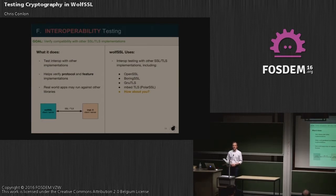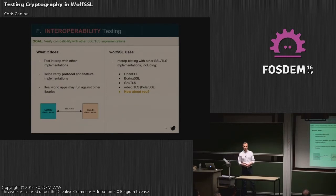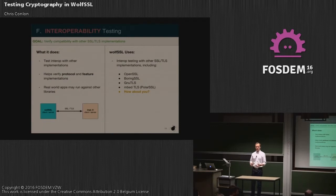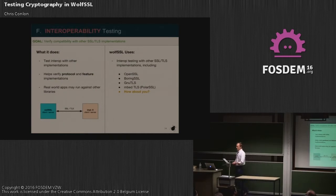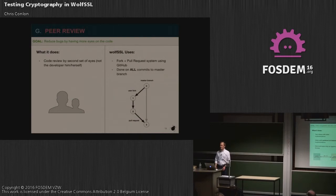The next category is interop testing. Testing the algorithms doesn't necessarily test the correctness of the protocol implementation. Some TLS protocol RFCs are vague or hard to read and can be interpreted differently by different implementers. In the wild, applications are most likely not talking to the same implementation on each side — OpenSSL might be talking to WolfSSL, or LibreSSL might be talking to BoringSSL. So we do regular interop testing with OpenSSL, BoringSSL, SSL/TLS, and mbedTLS (formerly PolarSSL). If we're not testing against your implementation, we'd like to be — please come talk to us.